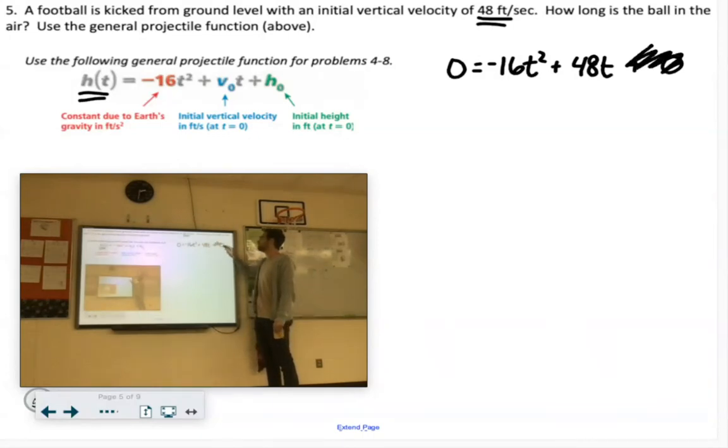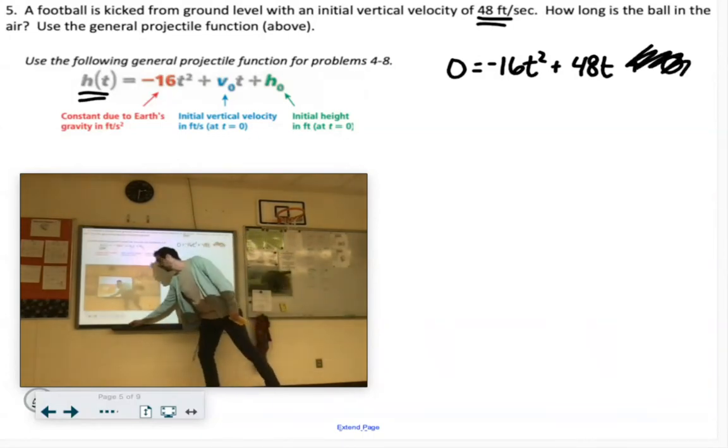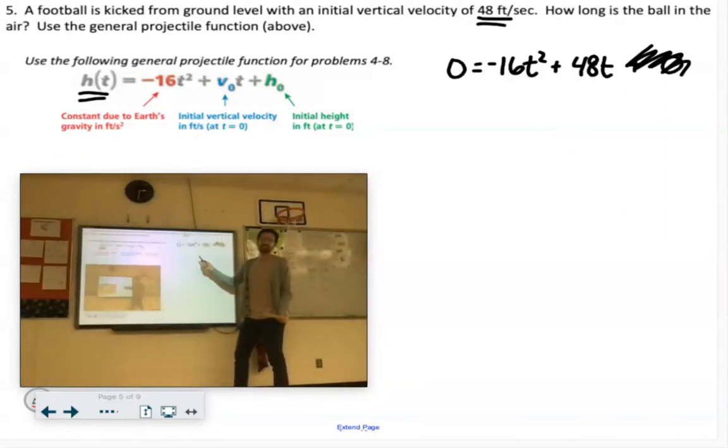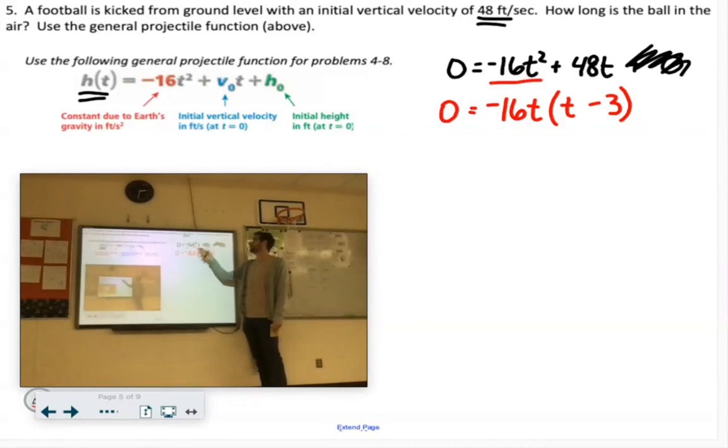Now if we're factoring this, 16 goes into 48 and they both have a t. So we could factor out a negative 16t as our greatest common factor, which would leave us with t minus 3 inside. Negative 16t times t is negative 16t squared. Negative 16t times negative 3 is positive 48t.